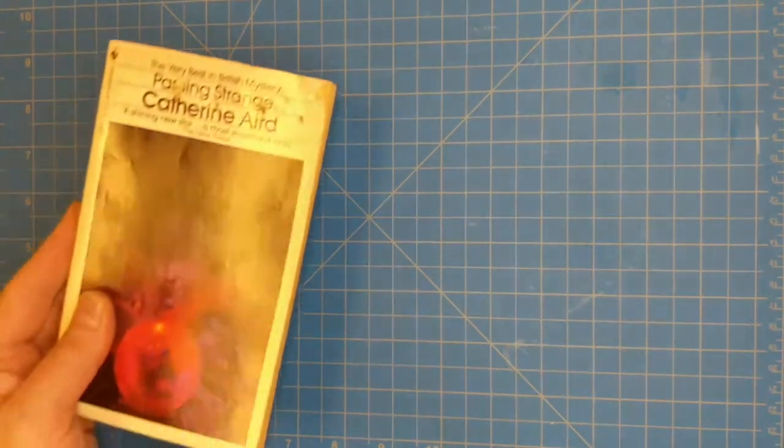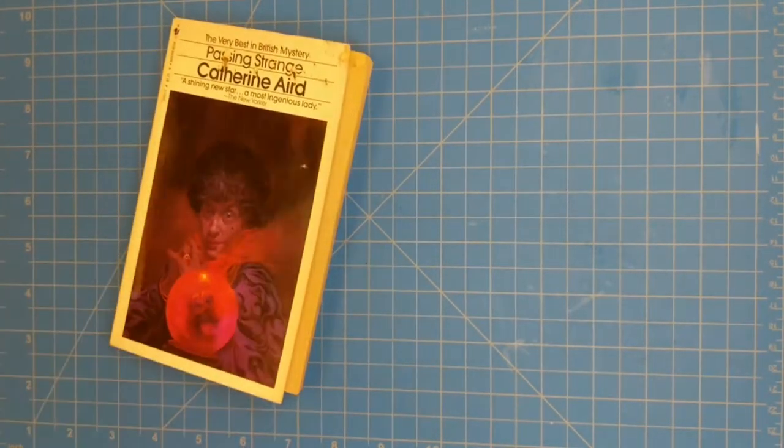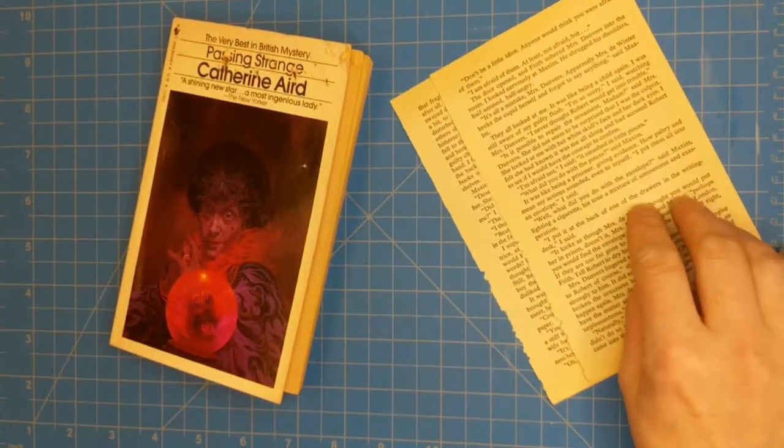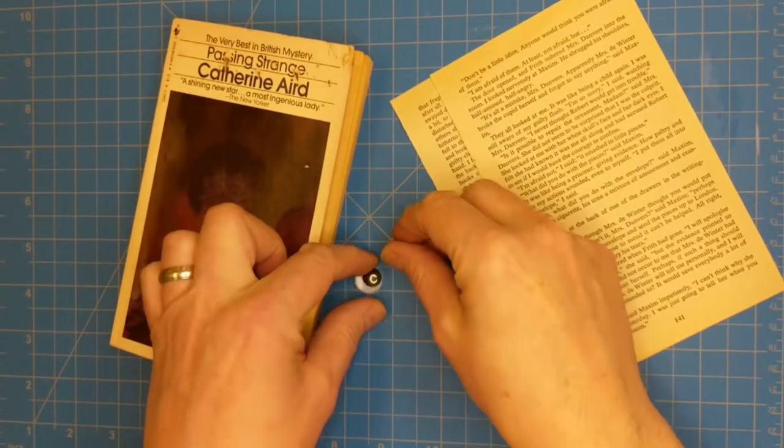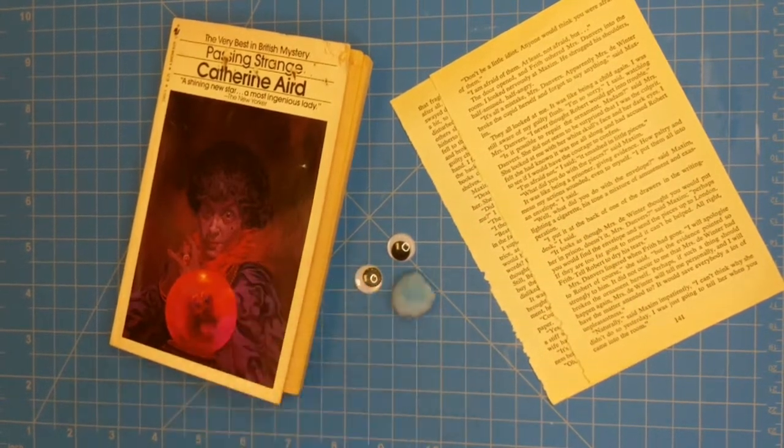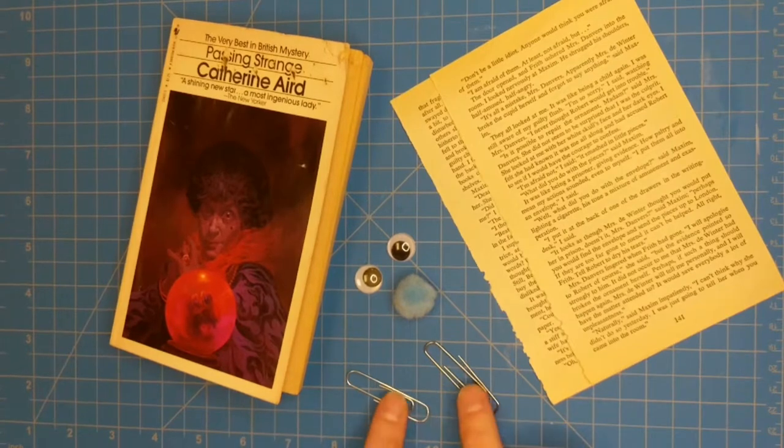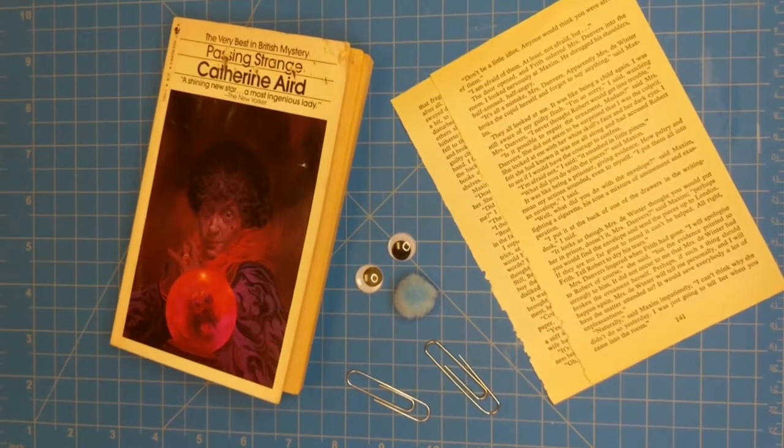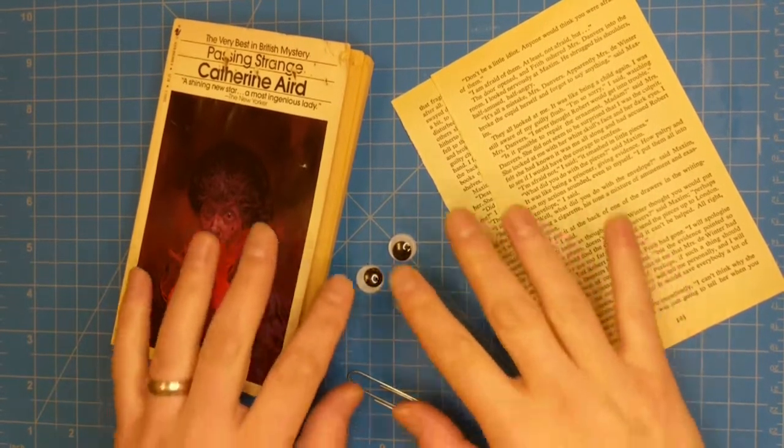If you got a kit from the library, you'll find a paperback book, a couple extra pages, some googly eyes, a pom-pom, and some paper clips. In addition to these things, you will need